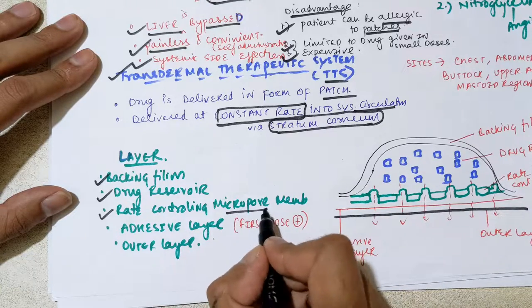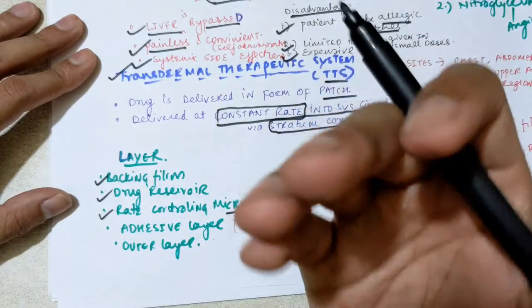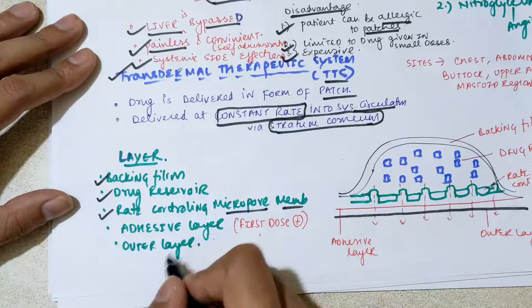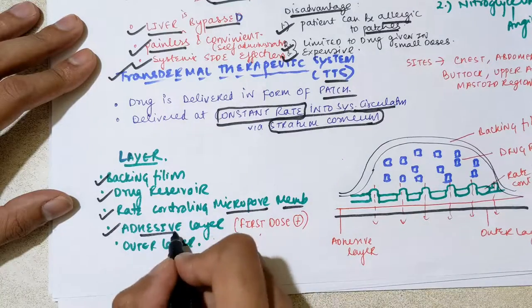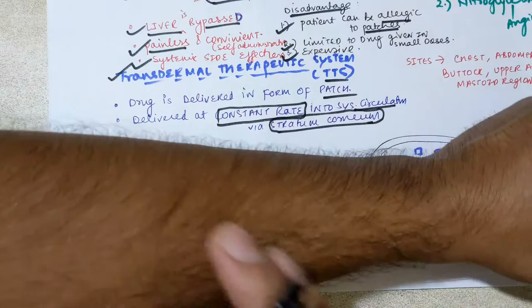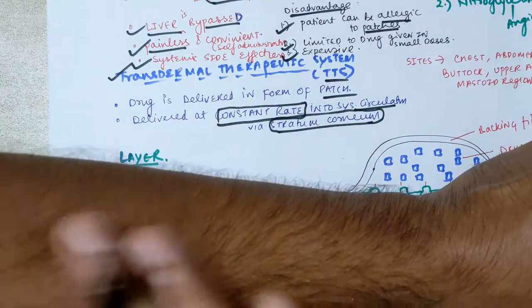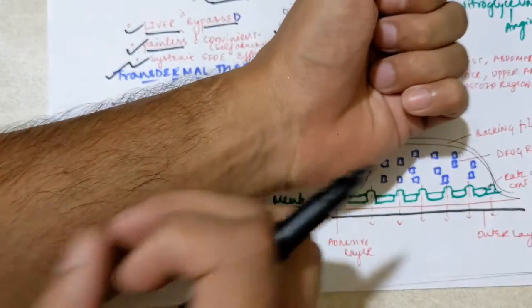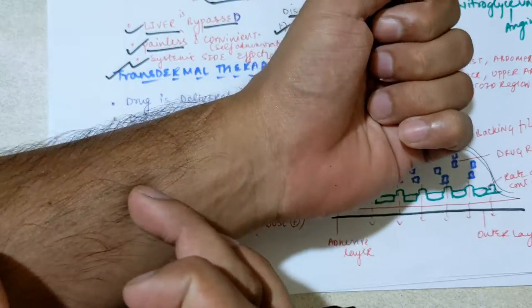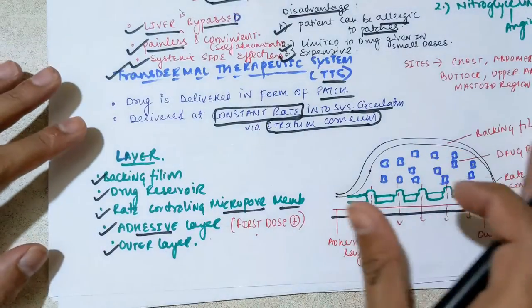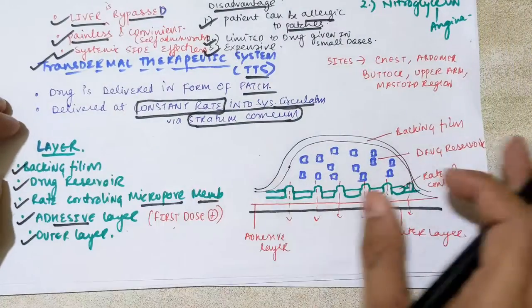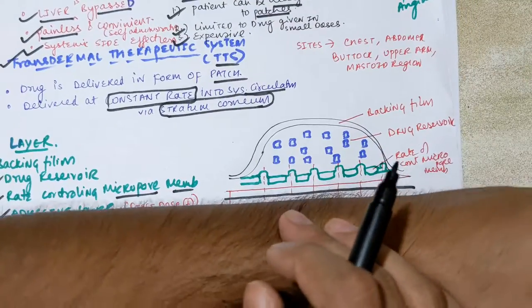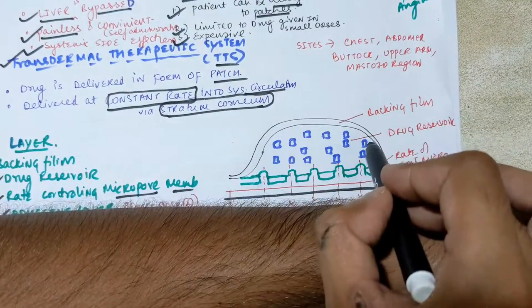Looking at the layers of the transdermal patch: first is the backing film, then the drug reservoir, then the rate-controlling micropore membrane — which controls how much drug is released at a time — then the adhesive layer, which is used to paste the patch on the skin, and finally the outer layer, like a bandage cover that you peel off before applying the patch to the skin.